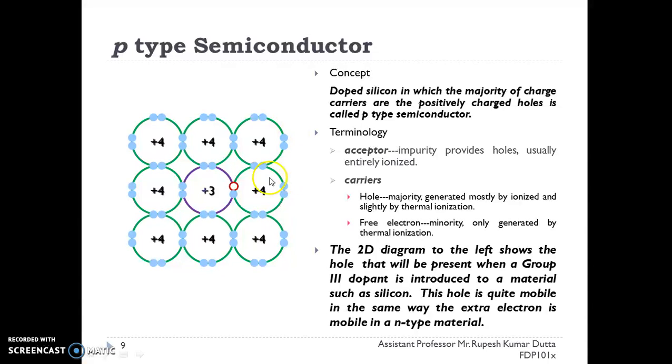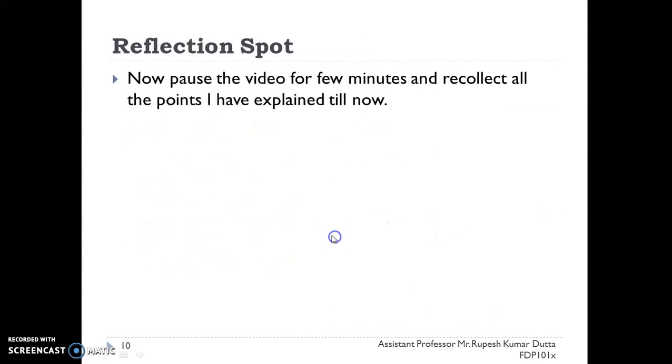This is a p-type semiconductor in which you can see this is a hole. This is known as an acceptor type of device in which hole is a majority carrier and electrons are minority carriers. These electrons are generated by thermal agitation. Now pause the video for a few seconds and recollect all the points that I have explained till now.